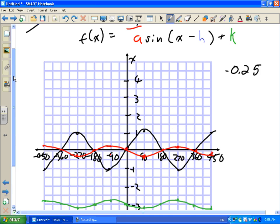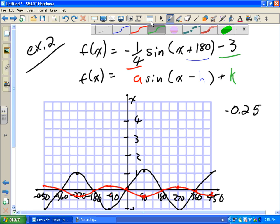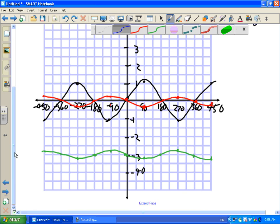And finally, our H. Our H is positive 180, which means everything is going to the left 180 degrees. So this zero goes here. This zero goes here. This zero goes here. This zero, well, it's not on the chart.